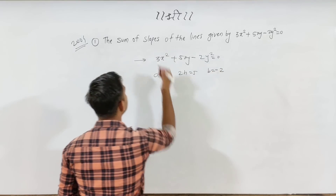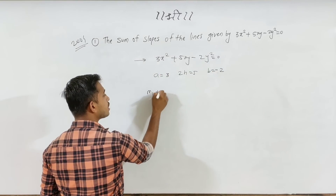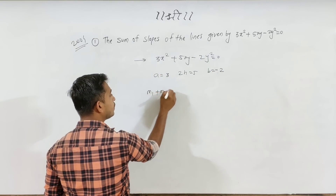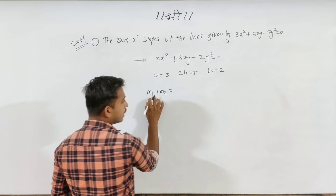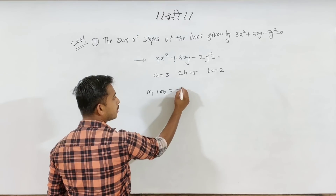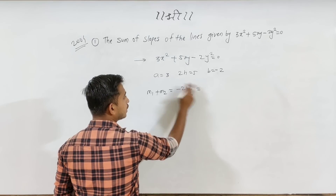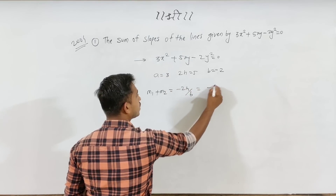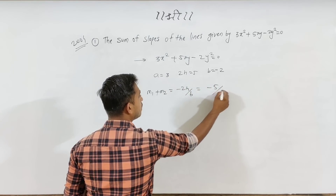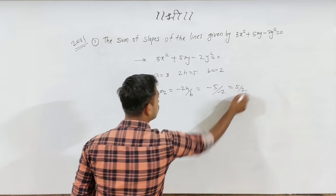So the sum of the slopes, m1 + m2, uses the formula minus 2h upon b. Here 2h = 5 and b = −2, so the answer is 5 upon 2.